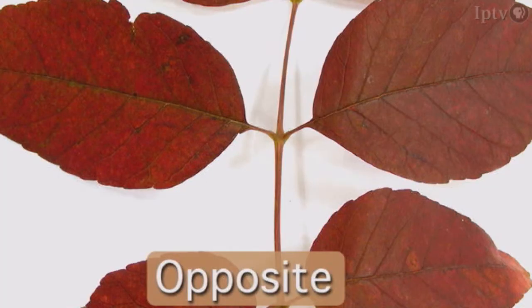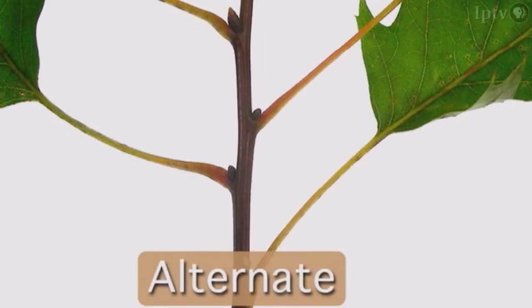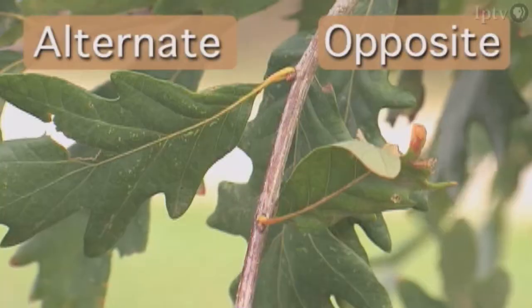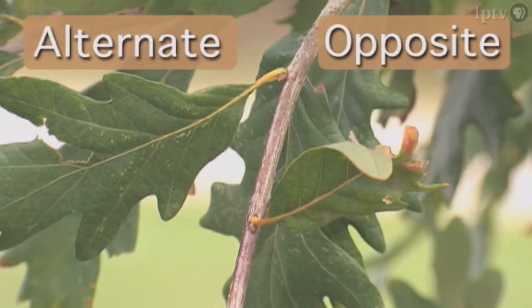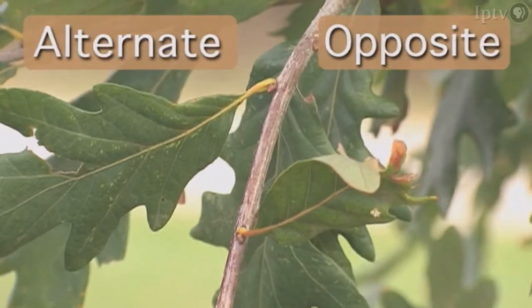The next question in the key is does this tree have opposite or alternate leaves on the branch? Opposite leaves grow directly across each other in pairs. Alternate leaves grow singly along the branch with space between each leaf. So does our tree have leaves that grow alternate or opposite along the branch? They are alternate.